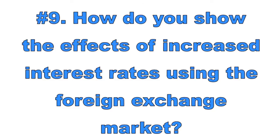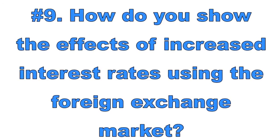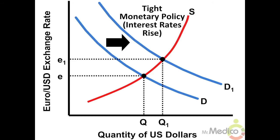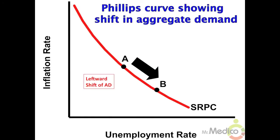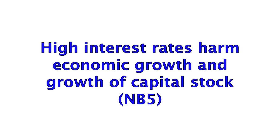Number nine: how do you show the effects of increased interest rates using the foreign exchange market? If a central bank pursues tight monetary policy causing interest rates to rise, or an expansionary fiscal policy causing interest rates to rise, there will be more demand by foreigners for the country's interest-bearing assets like bonds. This increases demand for currency, appreciating its value. When currency appreciates, the country's goods look more expensive to foreigners while foreign goods look cheap, reducing net exports and shifting aggregate demand to the left. High interest rates also harm long-run economic growth by slowing capital stock growth.